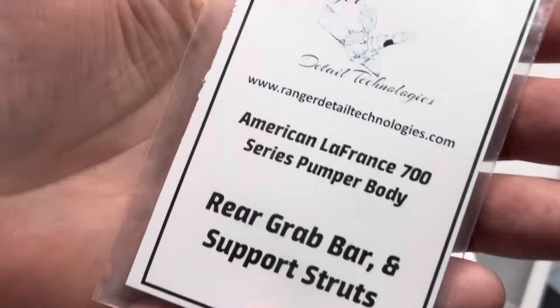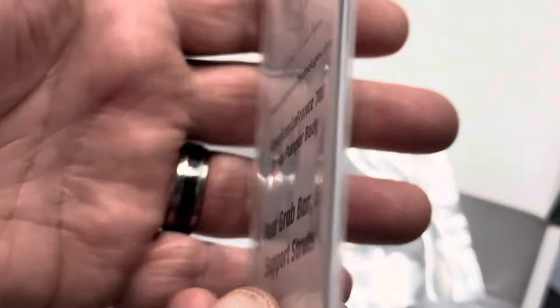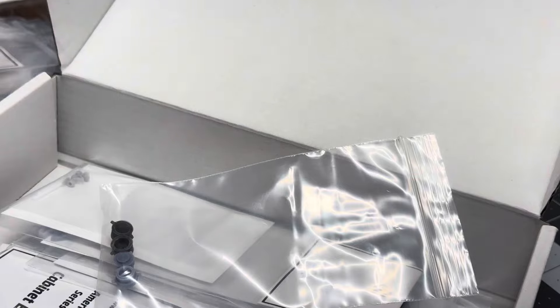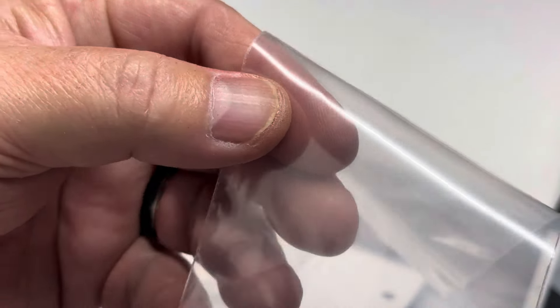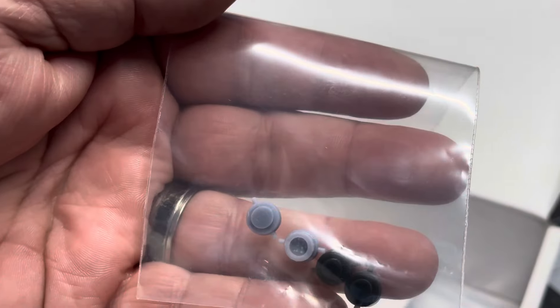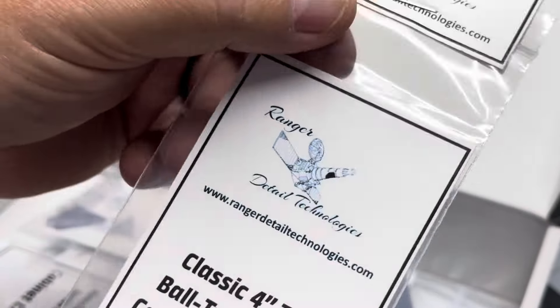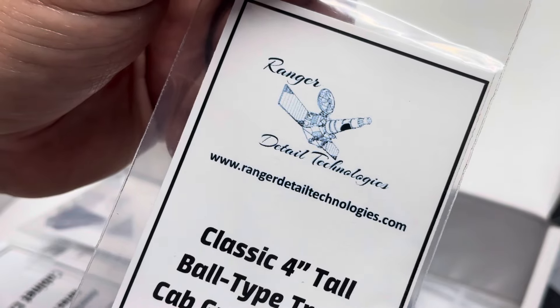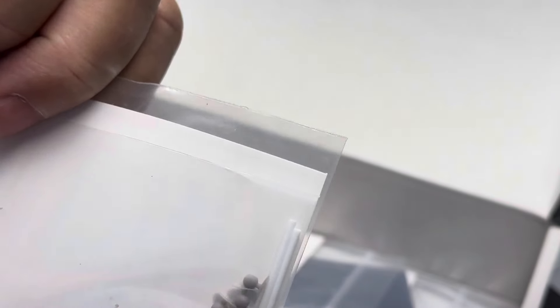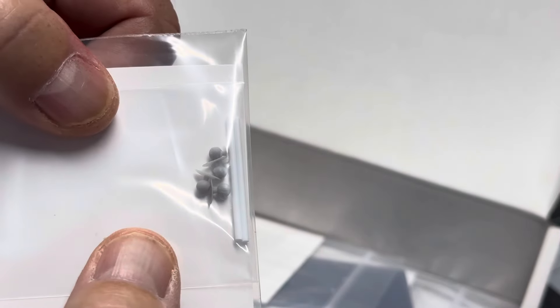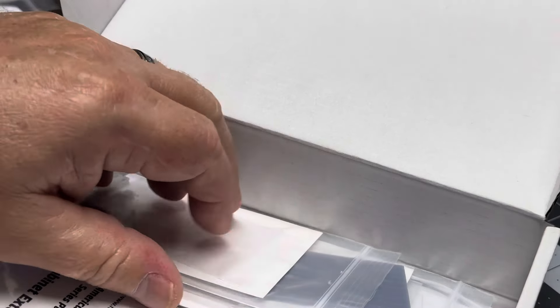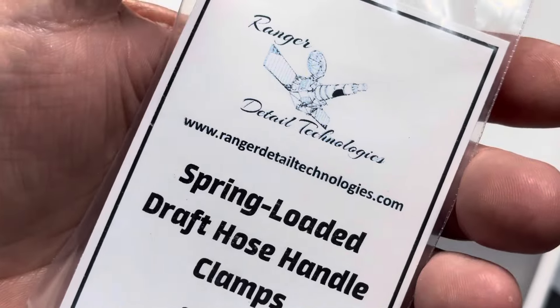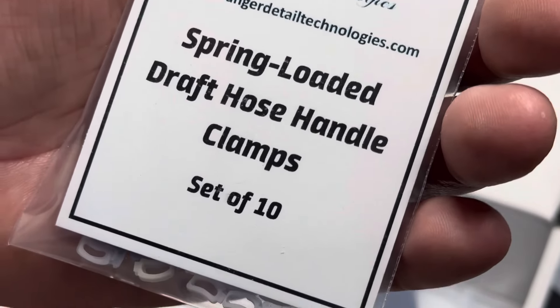What we have here - rear grab bar and support struts. Hard suction hose caps. Classic four inch tall ball type truck cab grab bar sets. So these will go on the side of the cab. Spring loaded draft hose handle clamps, ten of them. That's for your hard suction hoses on the side.